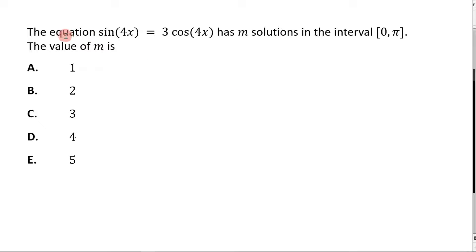We're answering this question before us. It says the equation sin(4x) equals 3cos(4x) has m solutions in the interval 0 to π. The value of m is which of the following? Now when it says has m solutions, what it's asking us to figure out here is how many solutions.